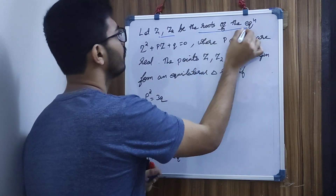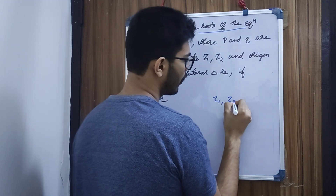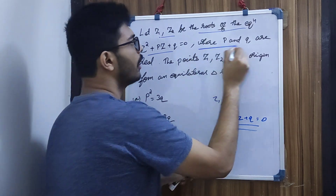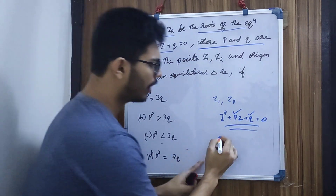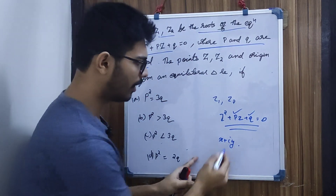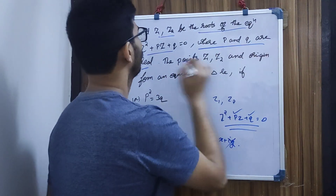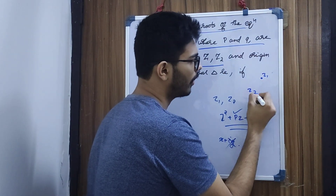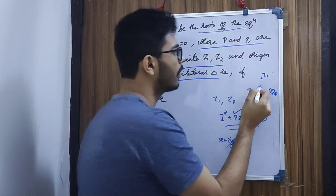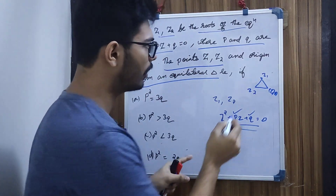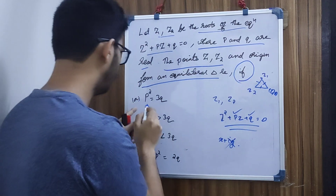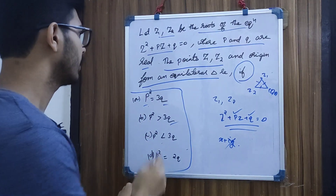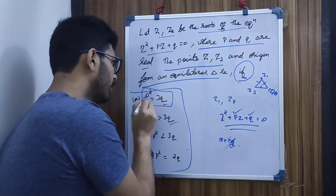Let z1 and z2 be the roots of the equation z² + pz + q = 0, where p and q are real numbers. The points z1, z2, and the origin z = 0 form an equilateral triangle. An equilateral triangle has three equal sides. We have the option: p² equals q.